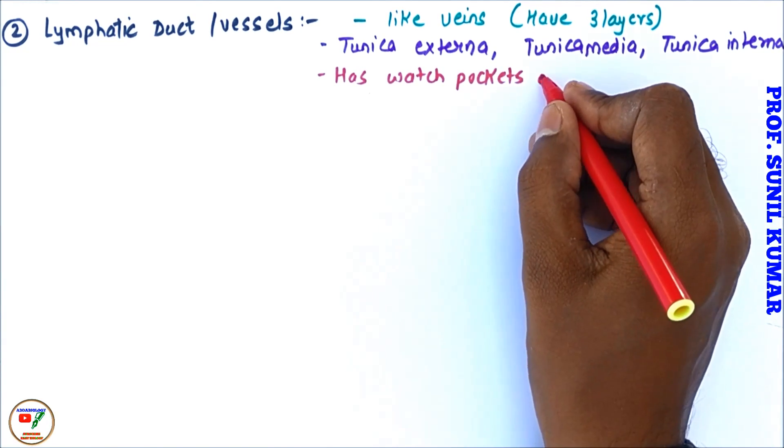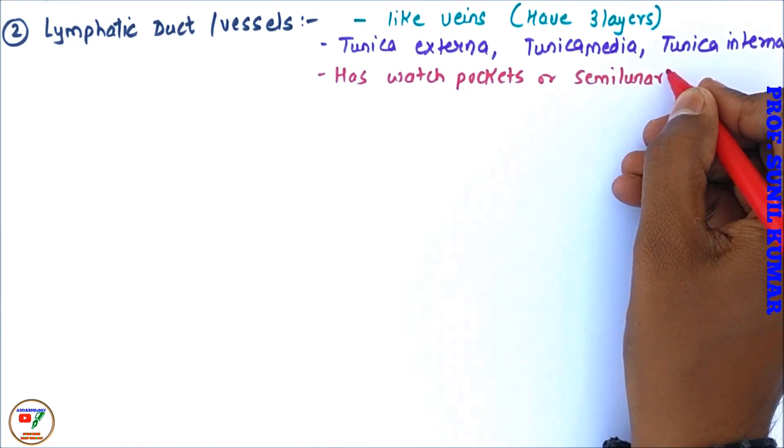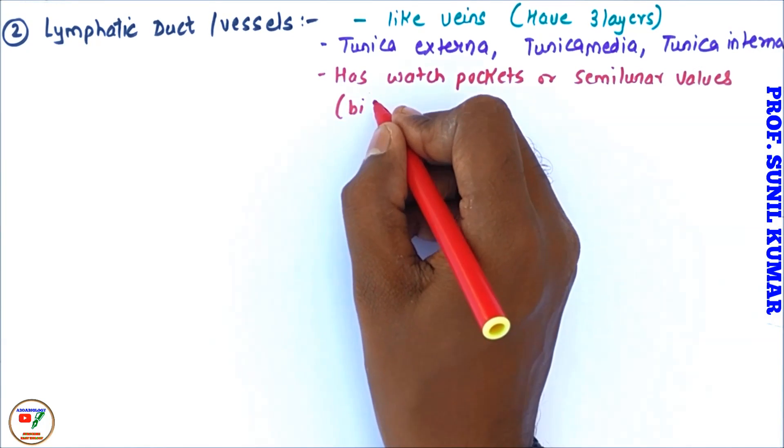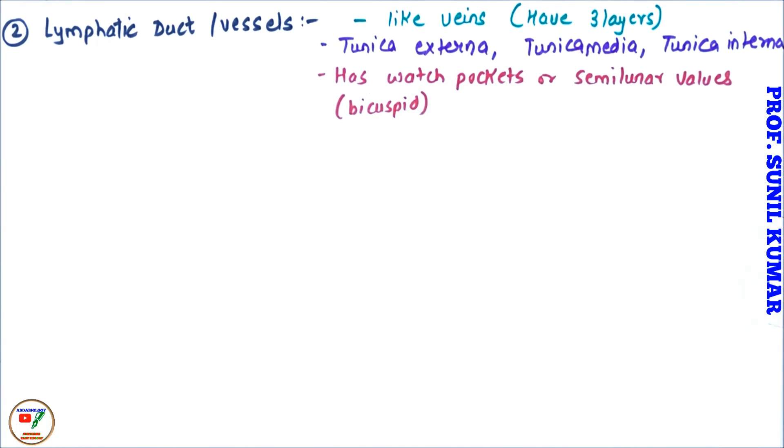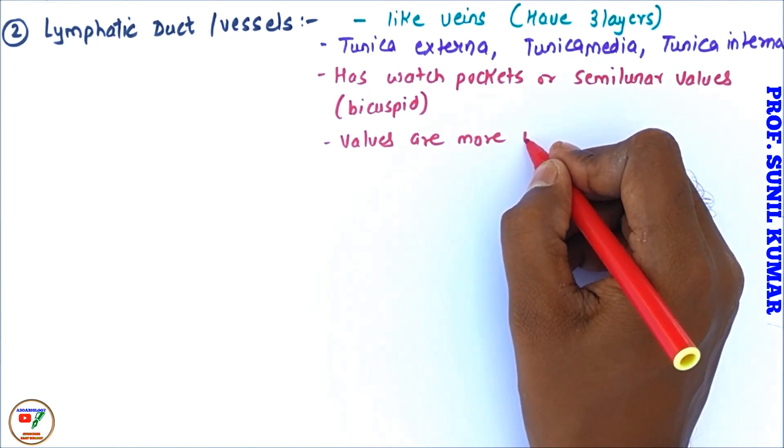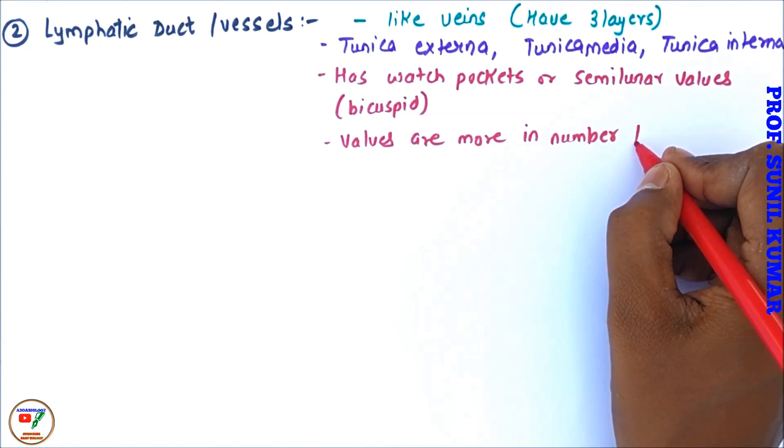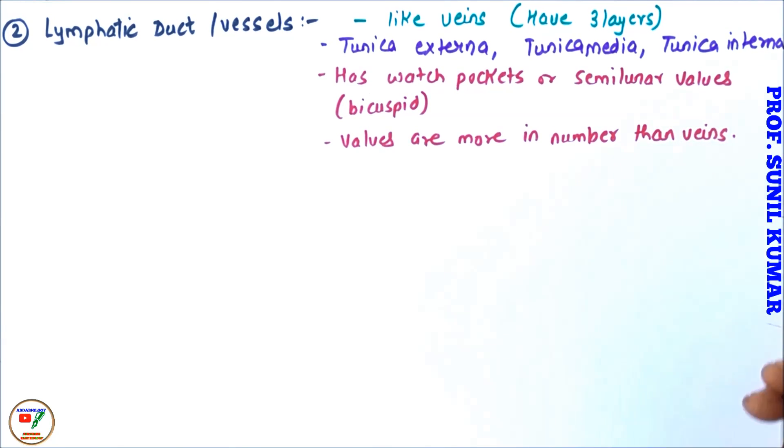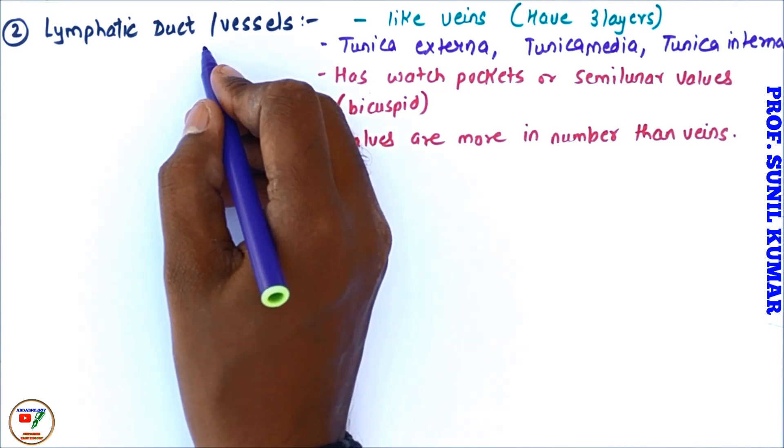The lymphatic duct has watch pockets or semilunar valves, we can call them bicuspid. The valves in case of lymphatic duct or vessels, we need to understand that they are more in number than veins.